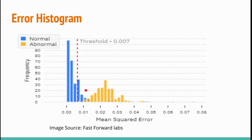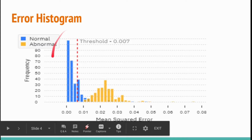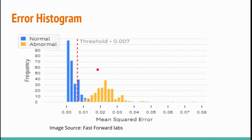You can use a small amount of labeled data to evaluate your model, or use both normal and abnormal data during validation. To set the threshold, you take the mean of the normal data's reconstruction error and apply one, two, or three standard deviations depending on your business use case. If incoming real-time data is above the threshold, it's an anomaly; below the threshold, it's normal data.